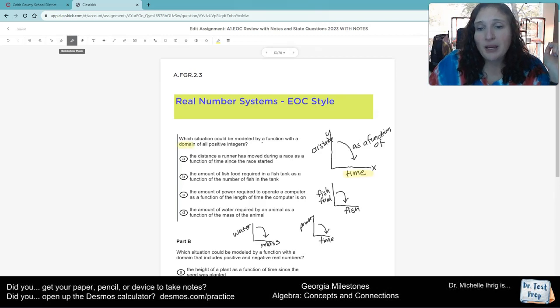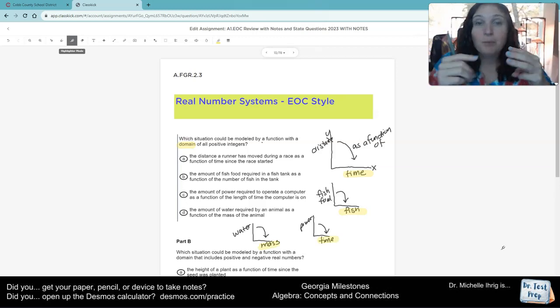Well, it says domain. Domain are our x values. So which of those three things, because time is mentioned twice, time, fish, or mass, which one of those would never have a decimal?